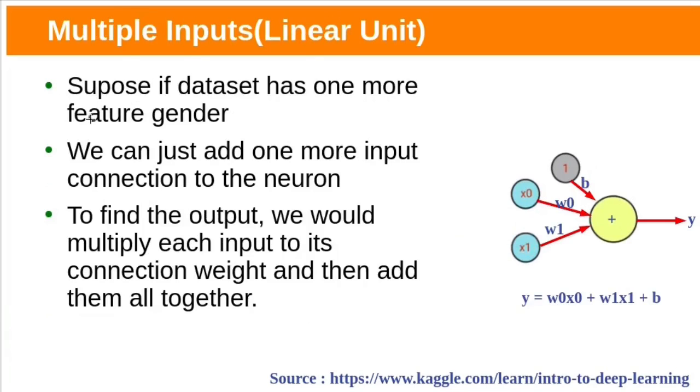Suppose if dataset has one more input feature, gender, say male and female, we can add one more input connection to the neuron. This is for height and this is for gender. To find the output, we would multiply each input value with its connection weight. Let's say for this connection, weight is w0, and for this connection weight is w1. Then model equation will be x0 times w0 plus x1 times w1 plus b.